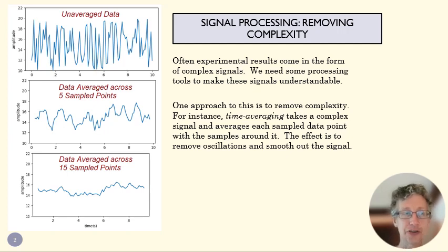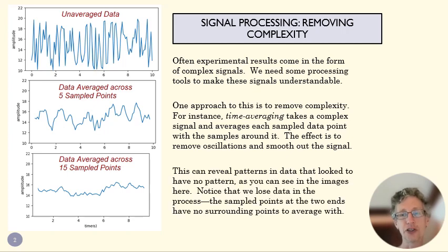The effect of this is to smooth that data out. Here's this same unaveraged data, time averaged across five sample points, taking two from the right side of each point, two from the left side of each point and averaging them with the middle point. And you can see that it smooths out. The nice thing about time averaging is it starts to reveal some patterns that you might not have seen in the initial data. This data looks basically random, it looks pretty flat.